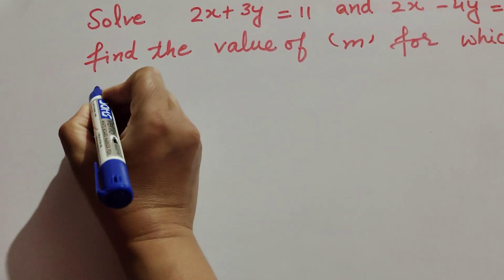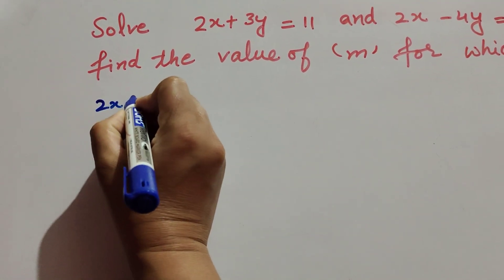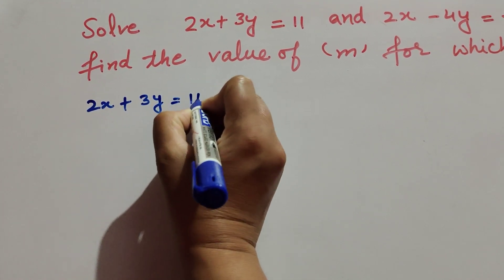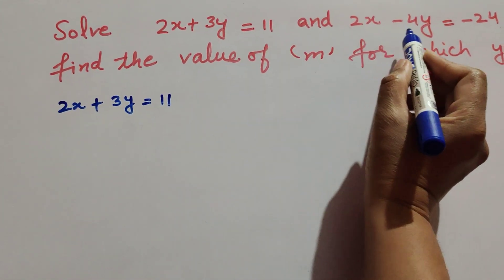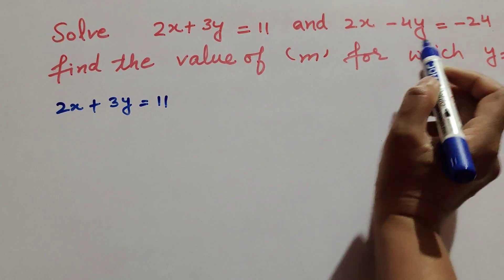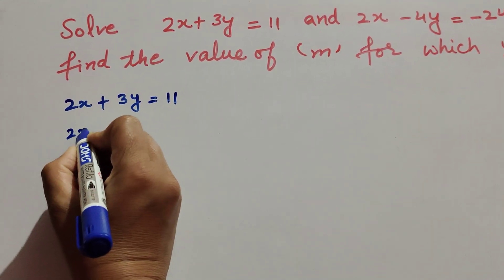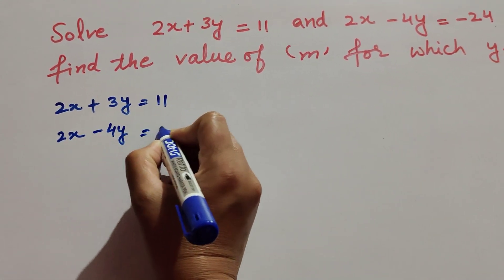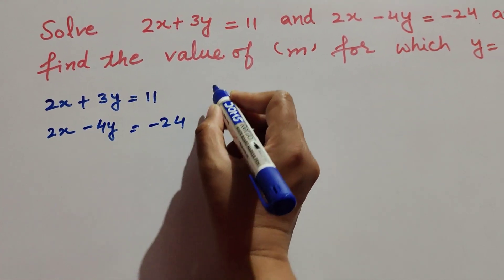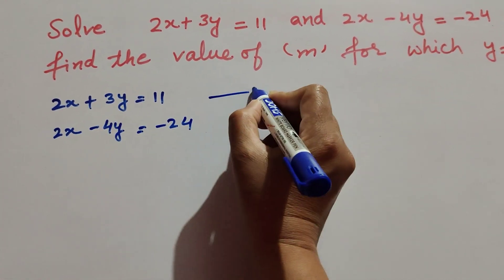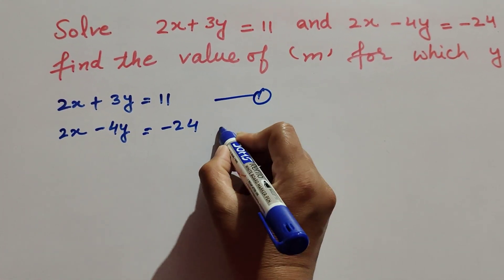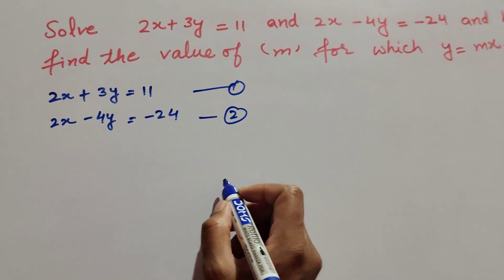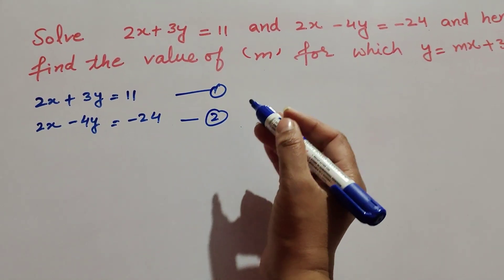The first equation is 2x plus 3y equal to 11, and the second is 2x minus 4y equal to minus 24. We mark these as equation number one and equation number two.